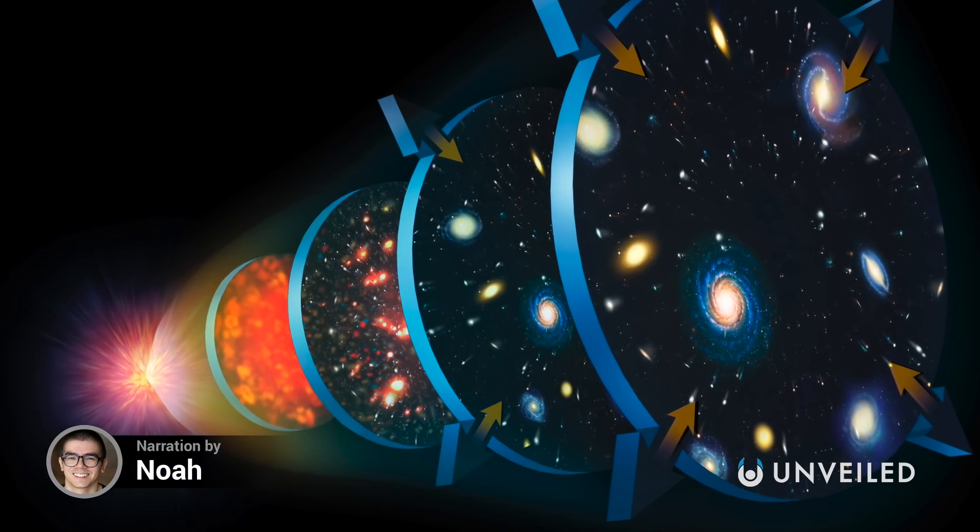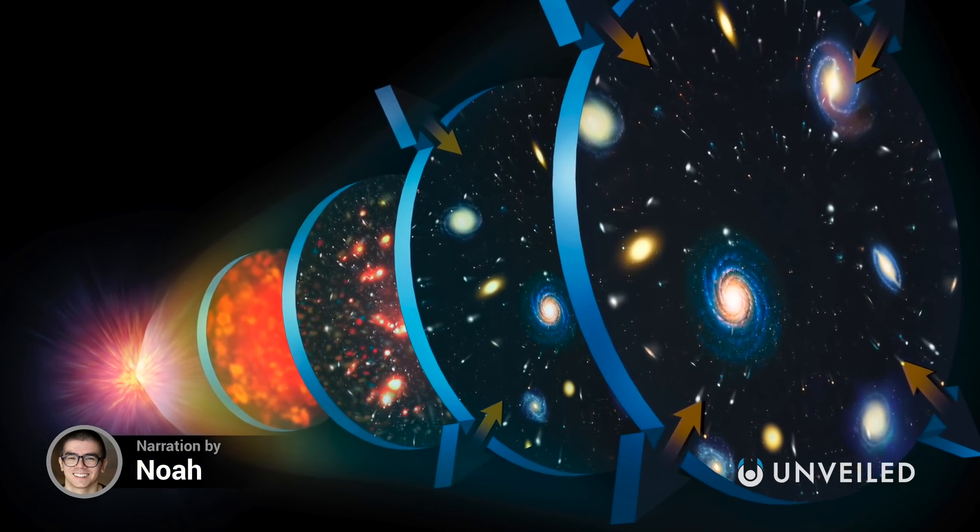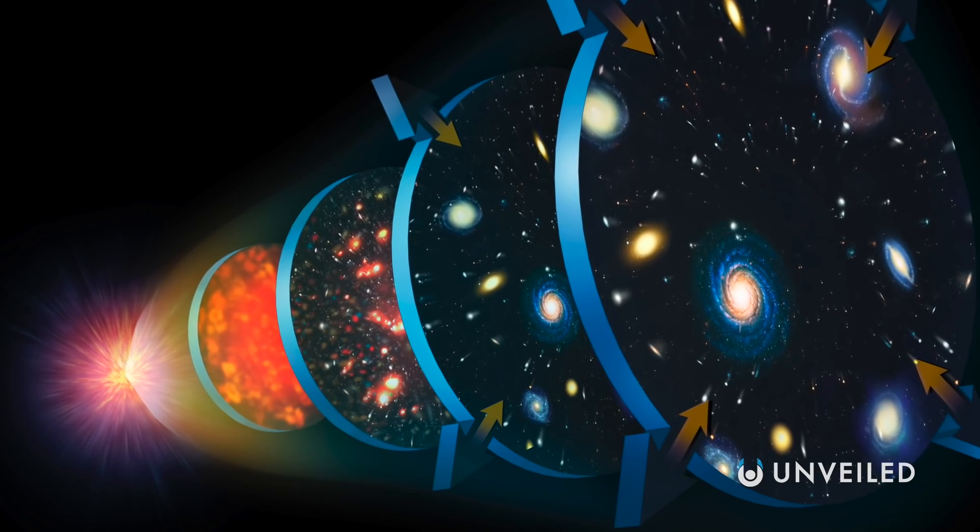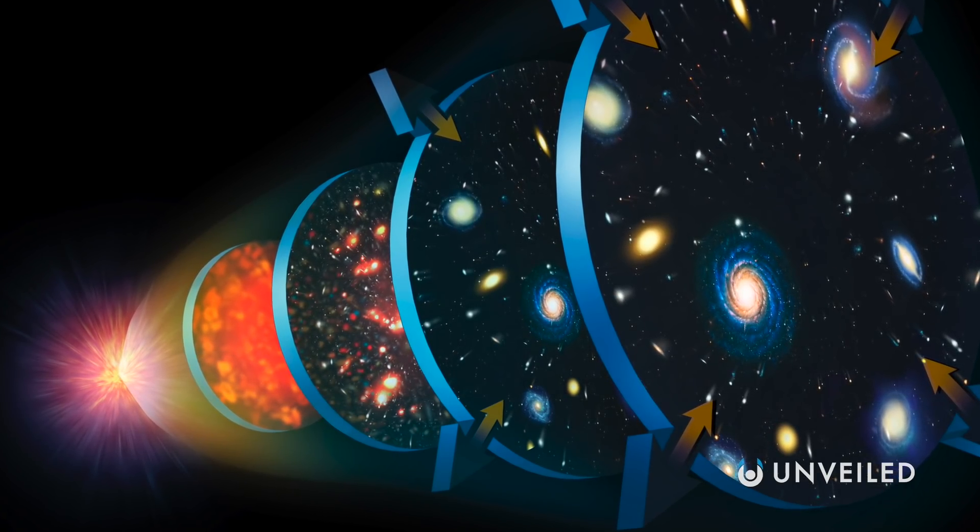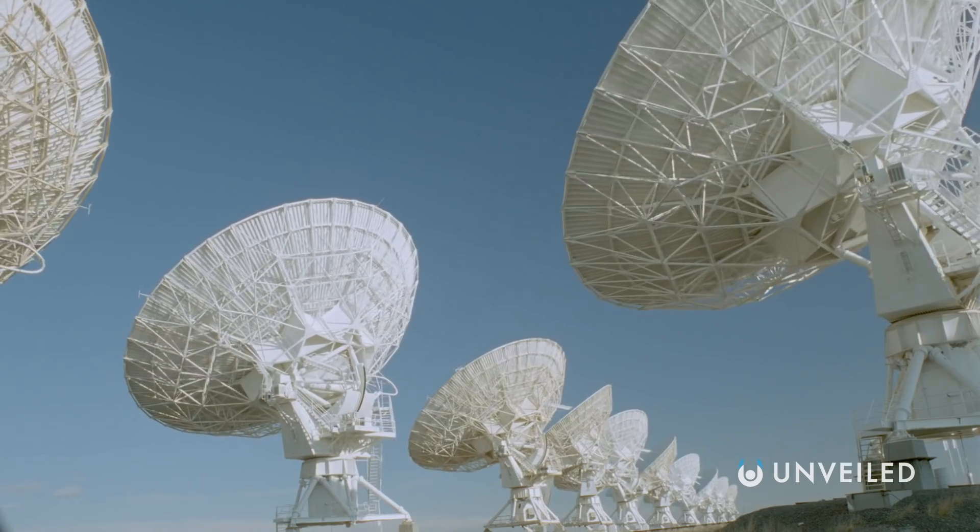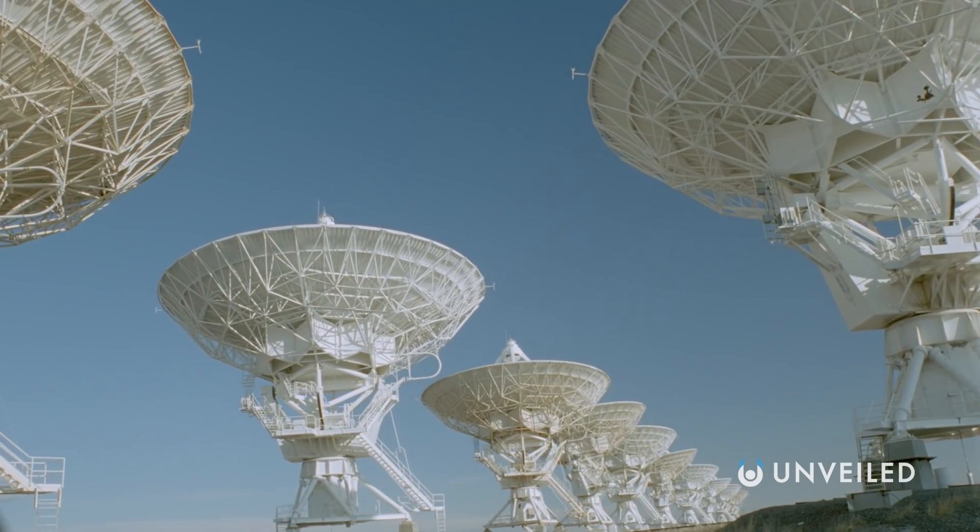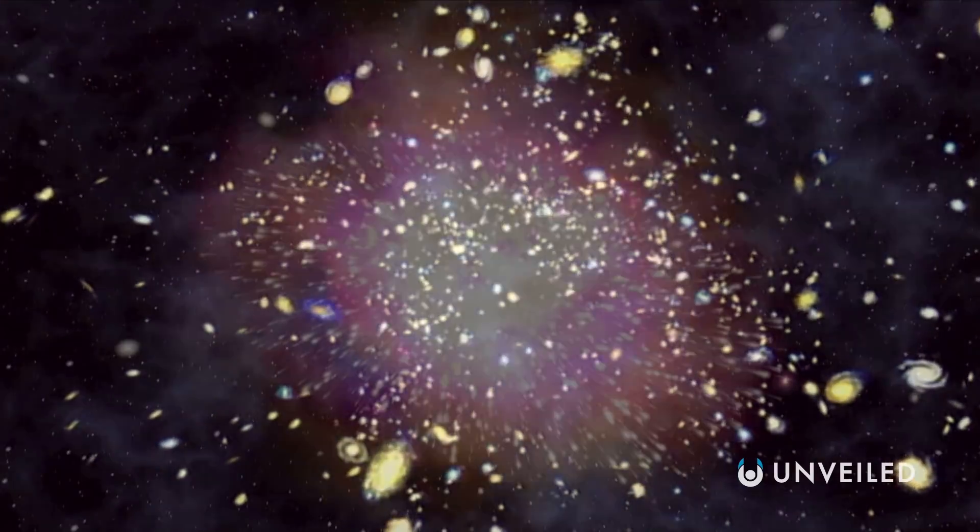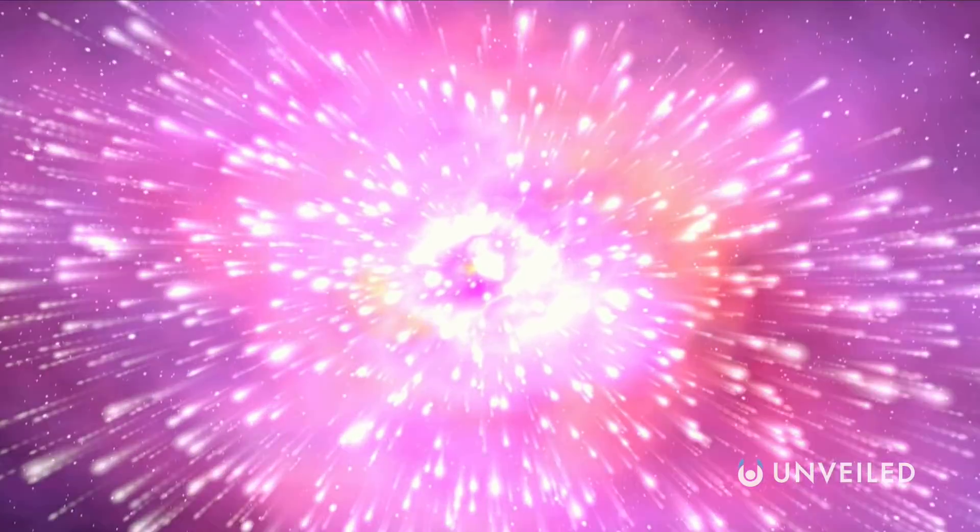When we look around at the universe we live in, we're really seeing its state after some 13.7 billion years. Thanks to scientific advances, we've been able to trace time all the way backwards to the event that started our universe in the first place. So what did the universe look like in its earliest moments?